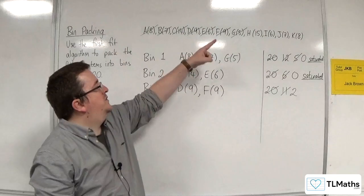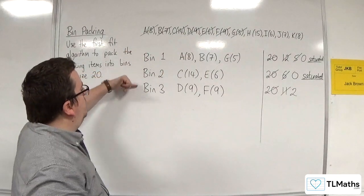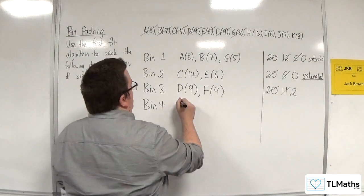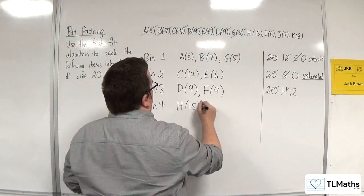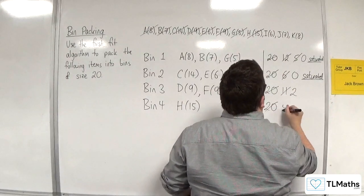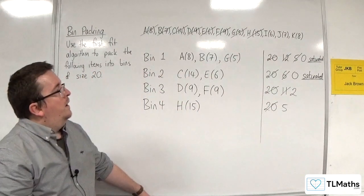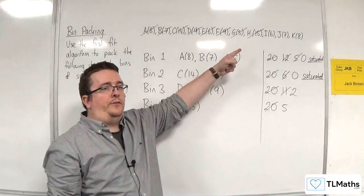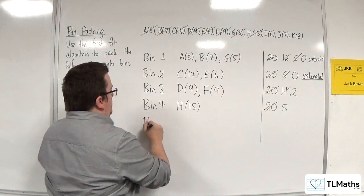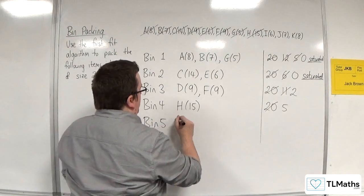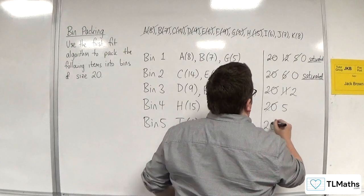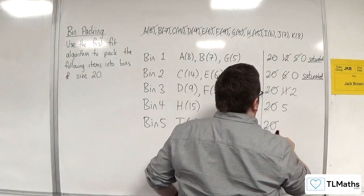H with 15 is coming along next. I can't fit it into bins one, two, or three, so I'm going to have to open up bin four. H 15 — so I did have 20 but I'm now down to just five. I is coming along next with length six, but it can't go into bins one, two, three, or four, so I'm going to have to open up bin five. I six — so I did have 20 but we're now down to 14.